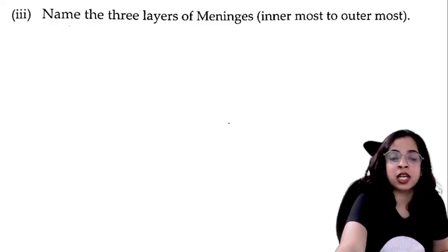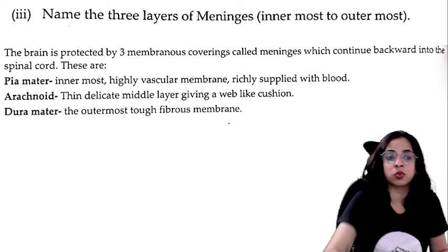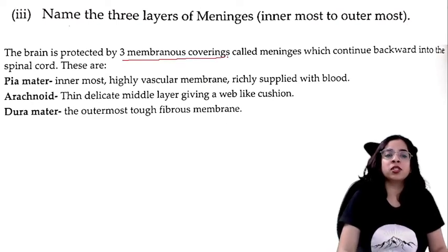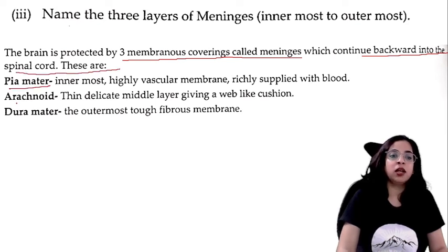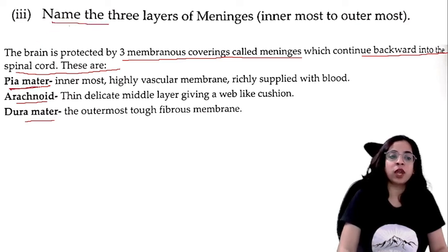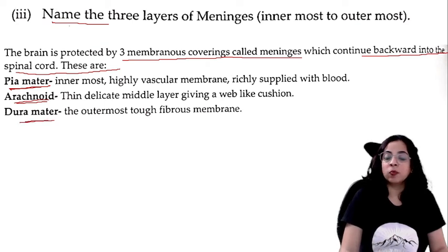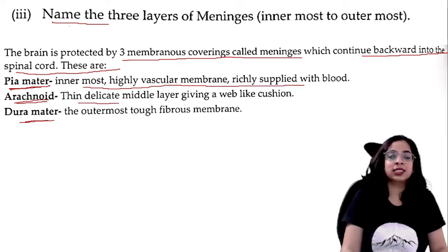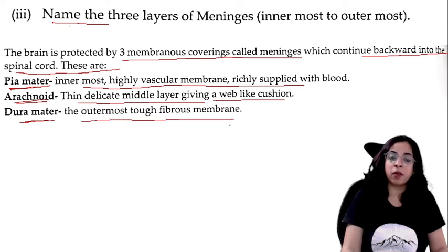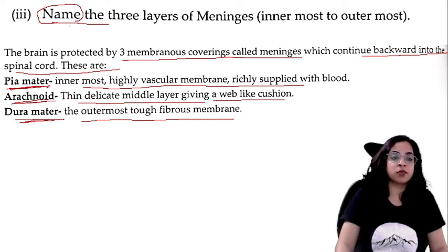Name the three layers of meninges from innermost to outermost. The brain is protected by three membranous coverings called meninges, which continue backwards into the spinal cord. These are: pia mater (innermost, highly vascular), arachnoid (thin, delicate middle layer giving a web-like cushion), and dura mater (outermost). Since only the names were asked, writing these three names is sufficient.